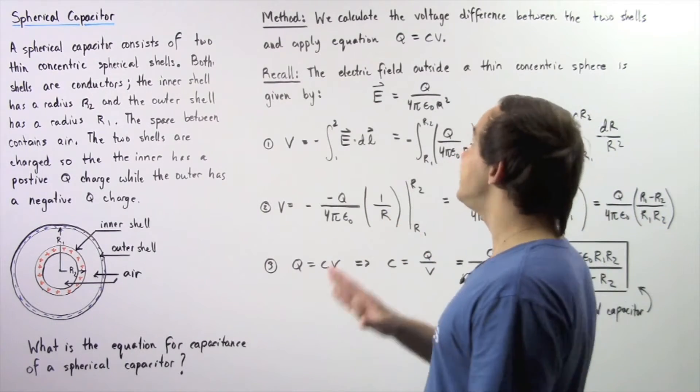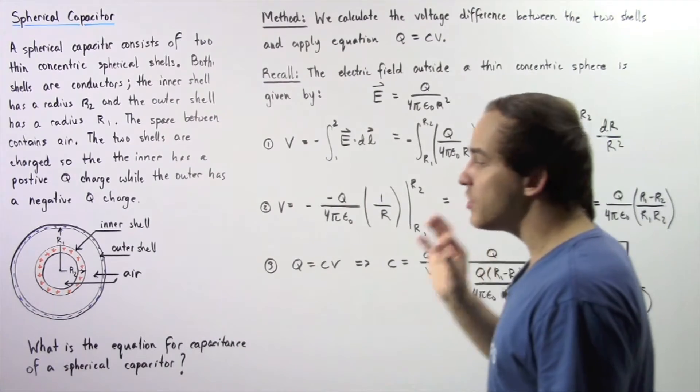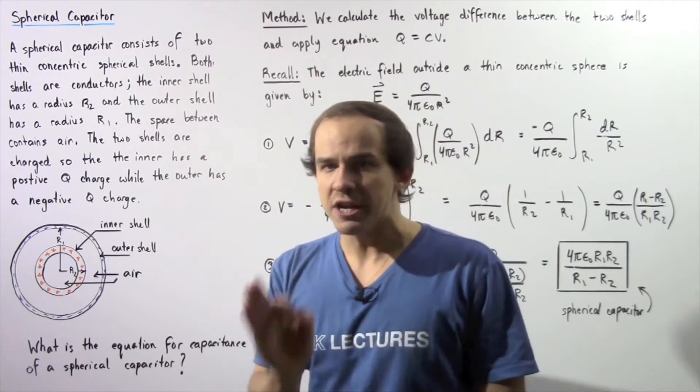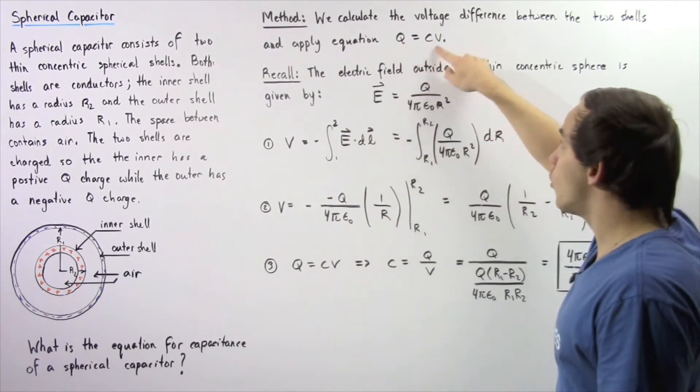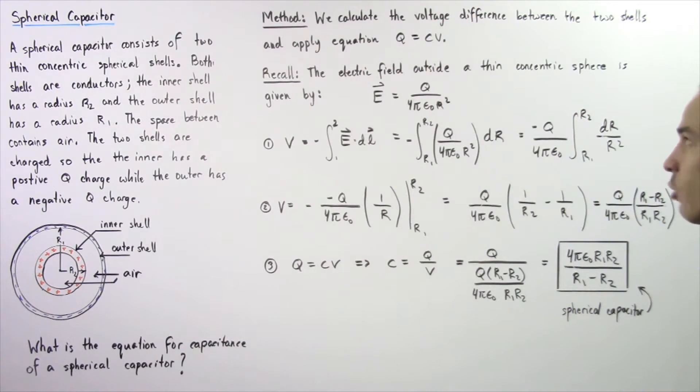In the first step, we want to calculate the voltage difference between these two shells. Then we want to use that voltage difference and the equation Q = CV to calculate and solve for our capacitance.